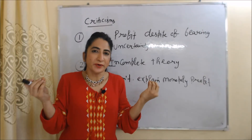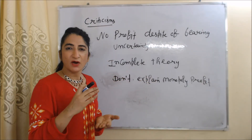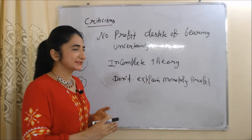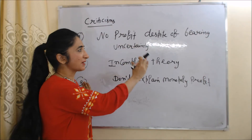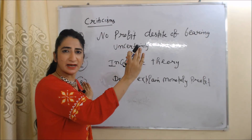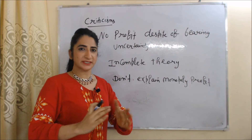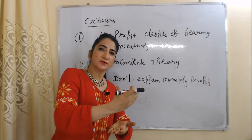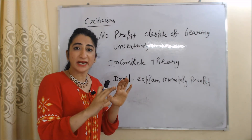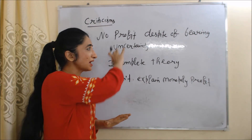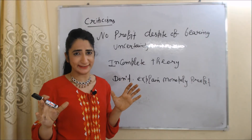Now we are going to talk about the criticisms of this theory. First criticism is: no profit despite bearing uncertainty. According to this theory, profit is the reward of bearing uncertainty, but sometimes we don't get profit despite bearing so much uncertainty.